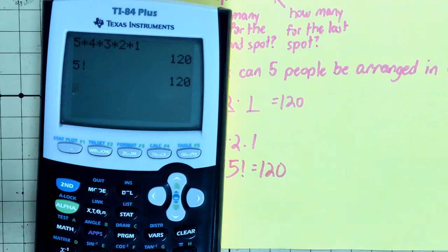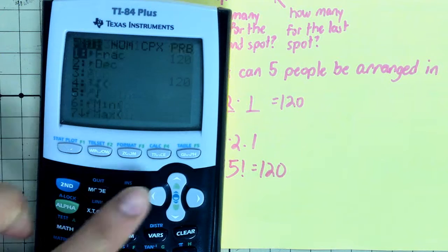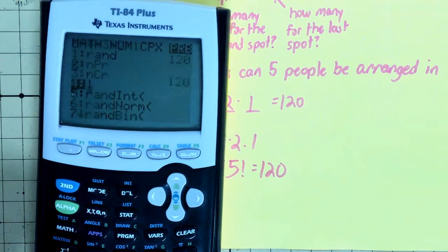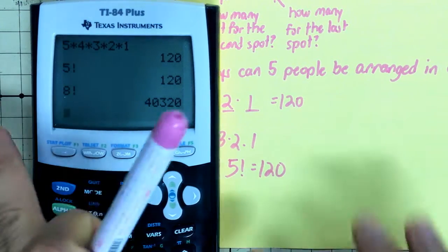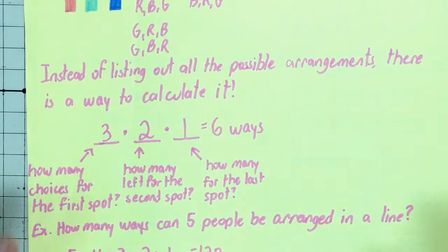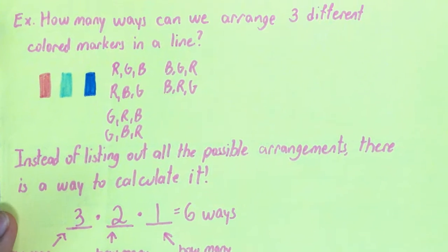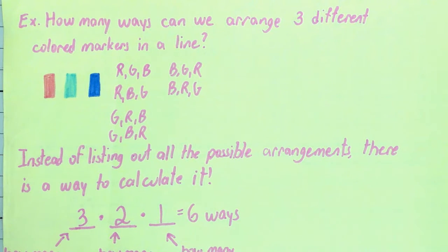So if we had eight different people, we just do eight factorial. So this is just an introduction to permutation of how to count, calculate how many different ways you can arrange a set of objects.